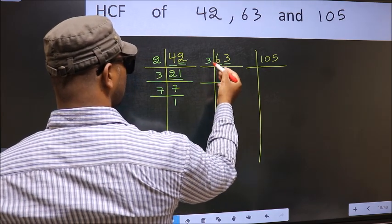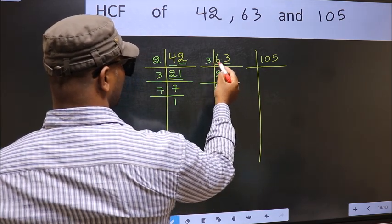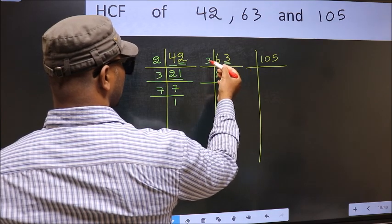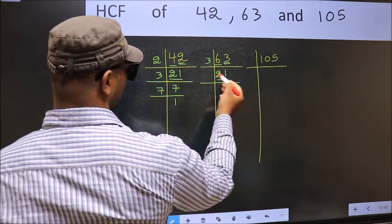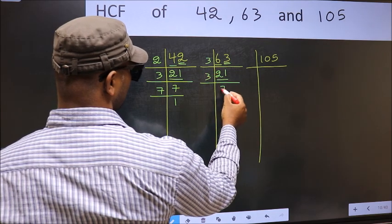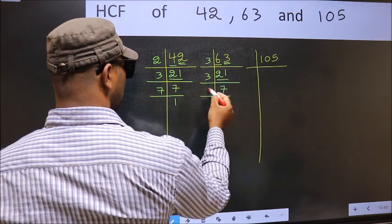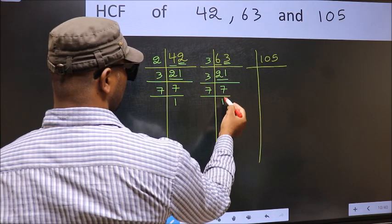First number 6. When do we get 6 in 3 table? 3, 2, 6. The other number 3. When do we get 3 in 3 table? 3, 1 is 3. Now we have 21, 21 is 3, 7 is 21. Now 7 is a prime number, so 7, 1 is 7.